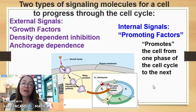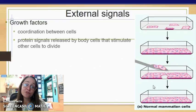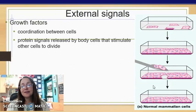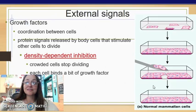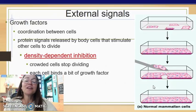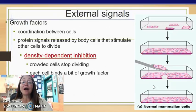Let's look first at external signals. Some external signals include growth factors that help coordinate actions between cells and help cells know when to divide or not. One of the things is density-dependent inhibition — crowded cells will actually stop dividing.